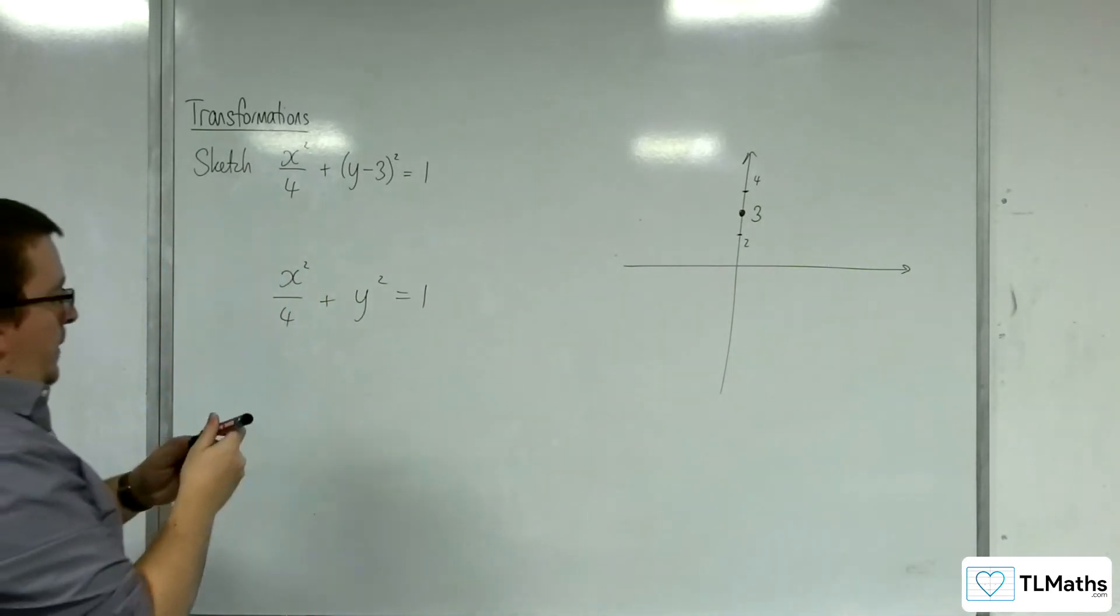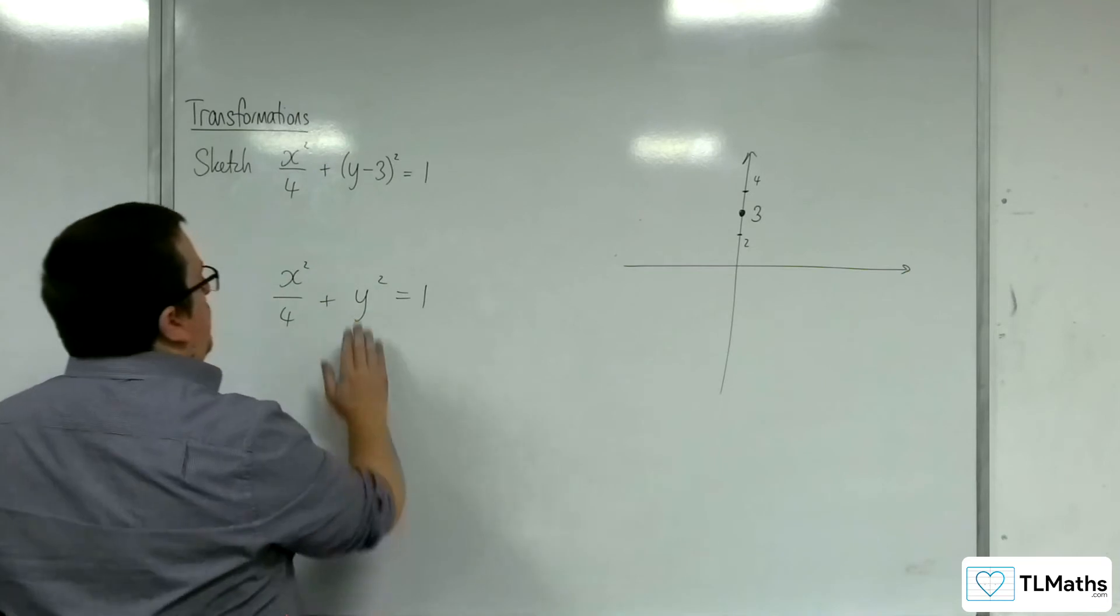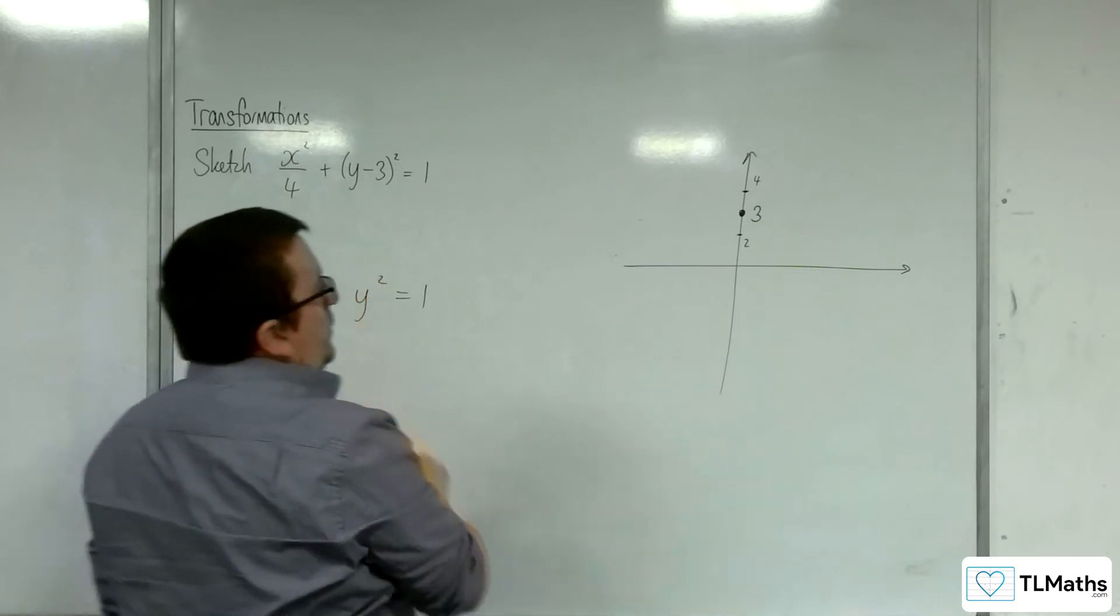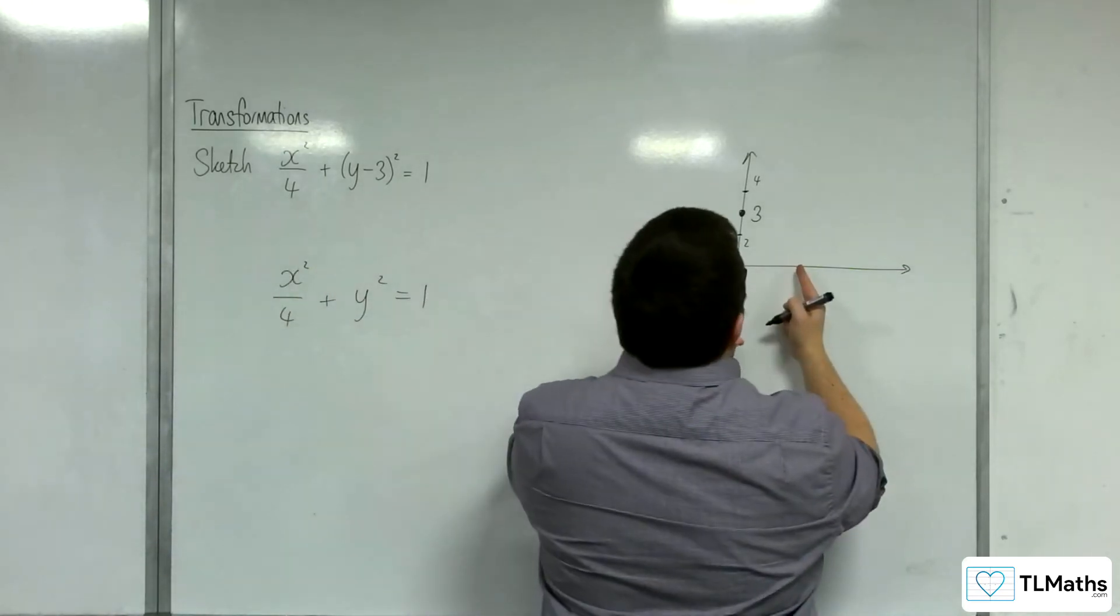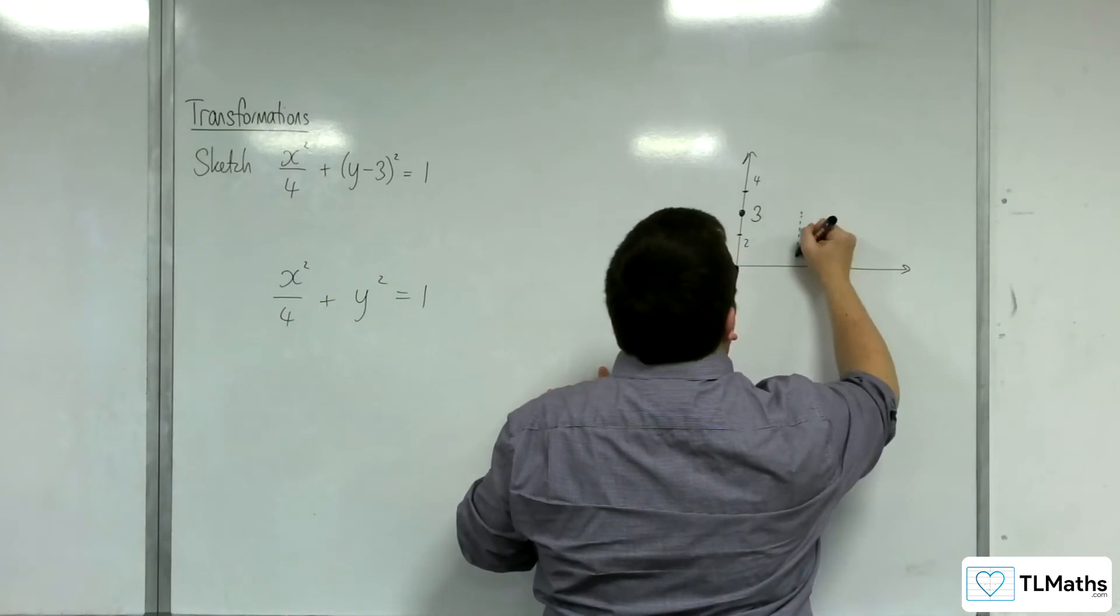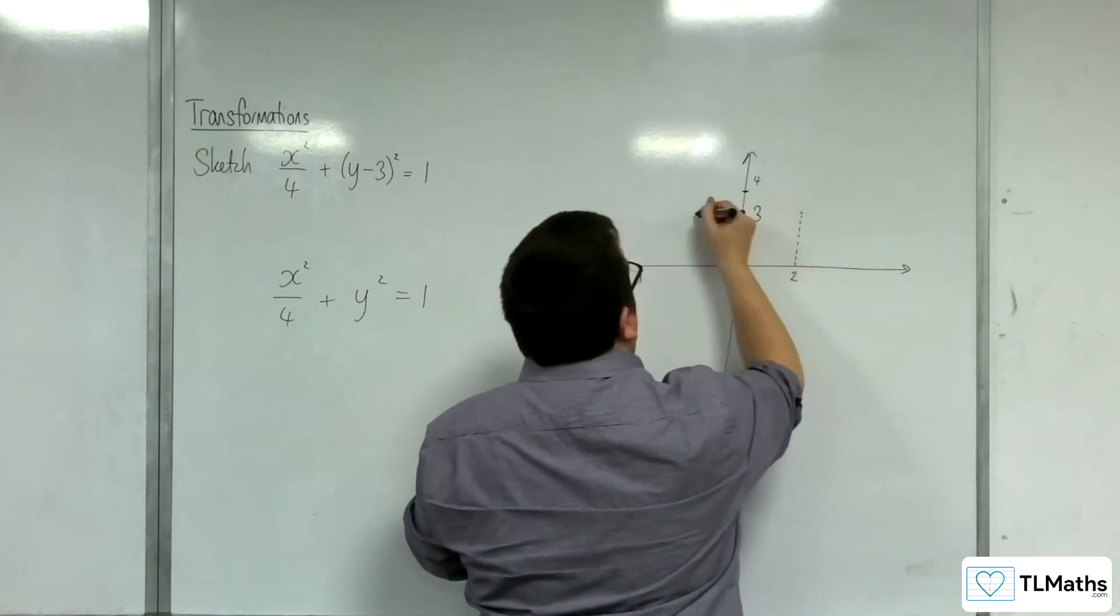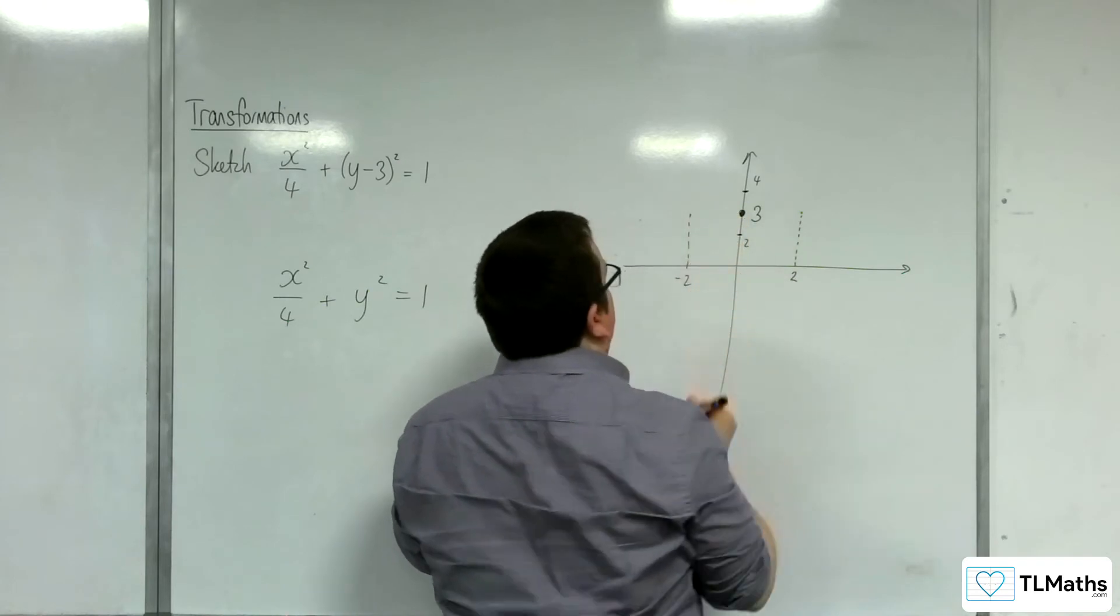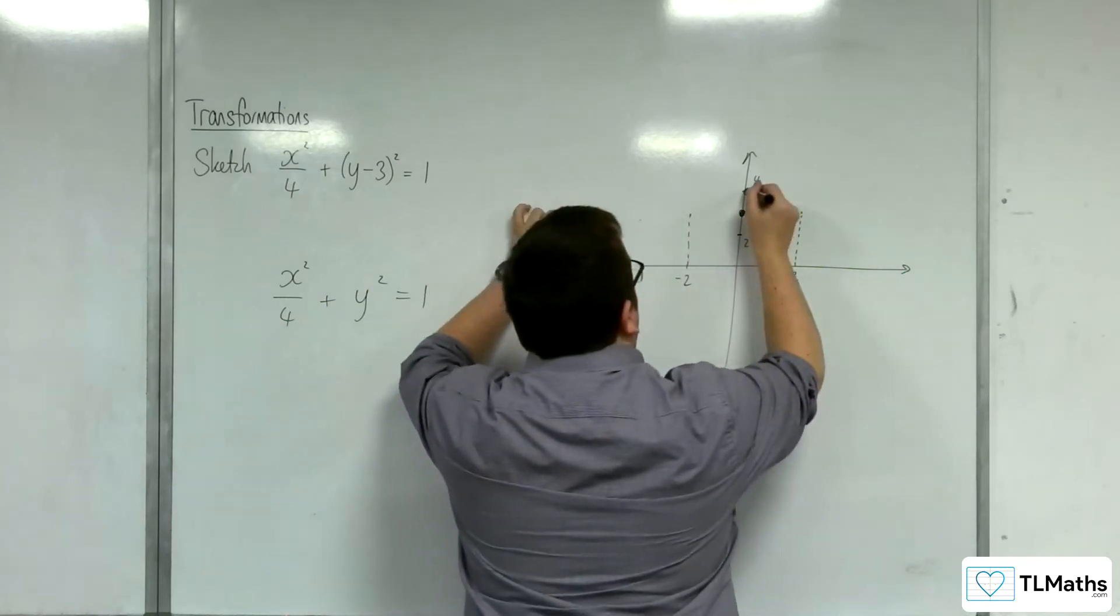Likewise, we can say, right, when y is 0, we would have had x squared equals 4, so x is plus or minus 2. So this graph has been translated upwards, and so it's now going through this point here, which is at 2, and this point here, which is at minus 2.